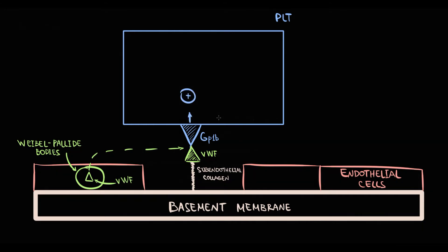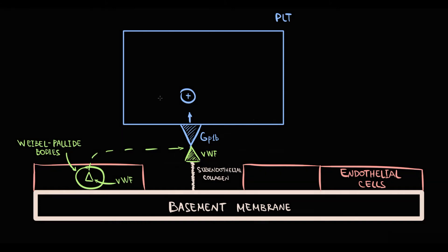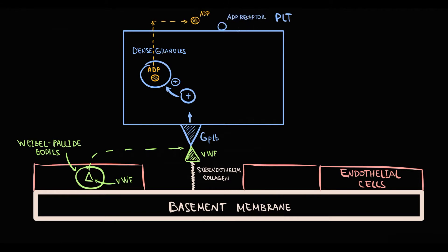In response to activation, platelets undergo shape change resulting in degranulation. With degranulation, platelets release the content inside them, including dense granules that contain ADP. ADP released into the blood acts on ADP receptors on platelets and activates them. Activation of the ADP receptor forces platelets to transport GP2B3A receptor to the surface, where GP2B3A serves as a binding site for fibrinogen.